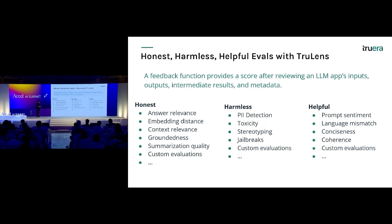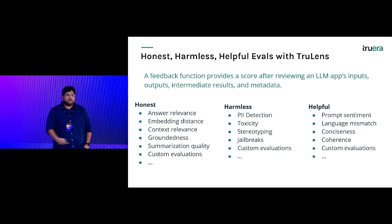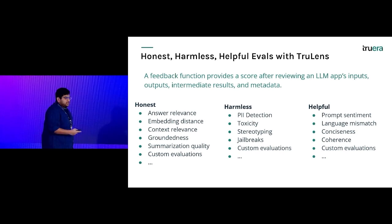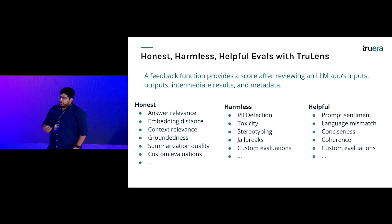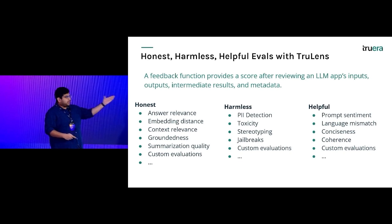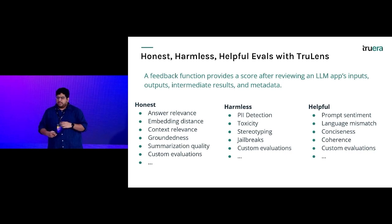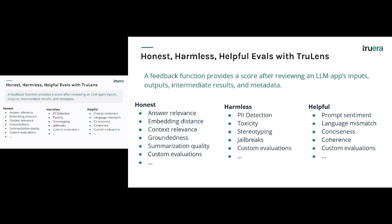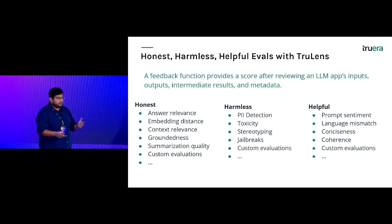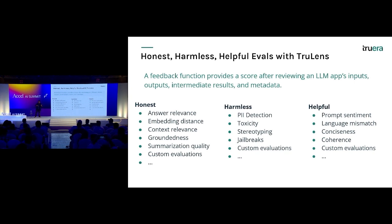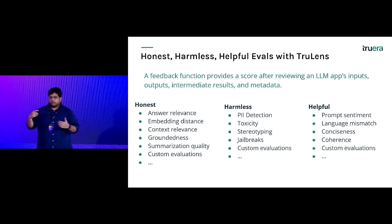The heart of it is: how do you do evaluations without a golden source of truth? What you can test against is a score that a feedback function gives while reviewing your LLM app's inputs, outputs, and intermediate results. Principally, whenever it's responding to someone, we need it to be honest, harmless, and helpful — simple human values — and we need our models to do the same.